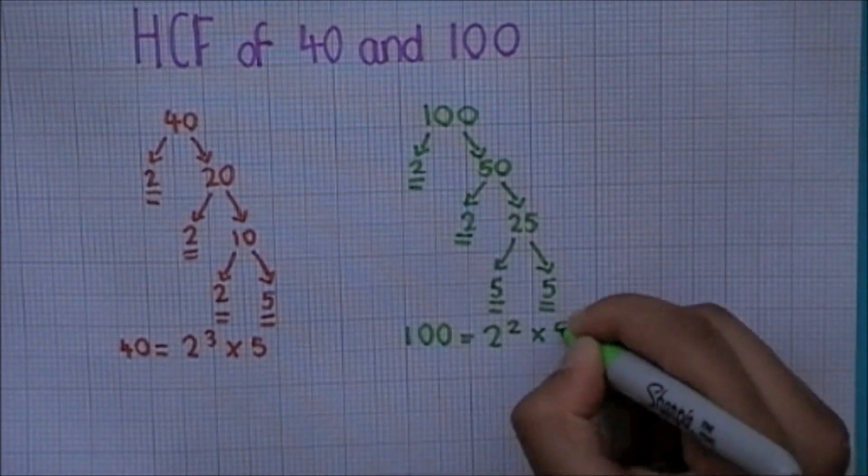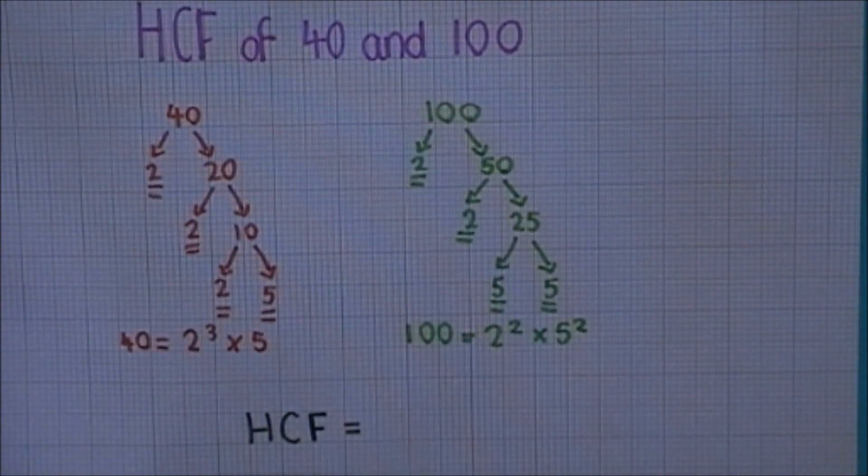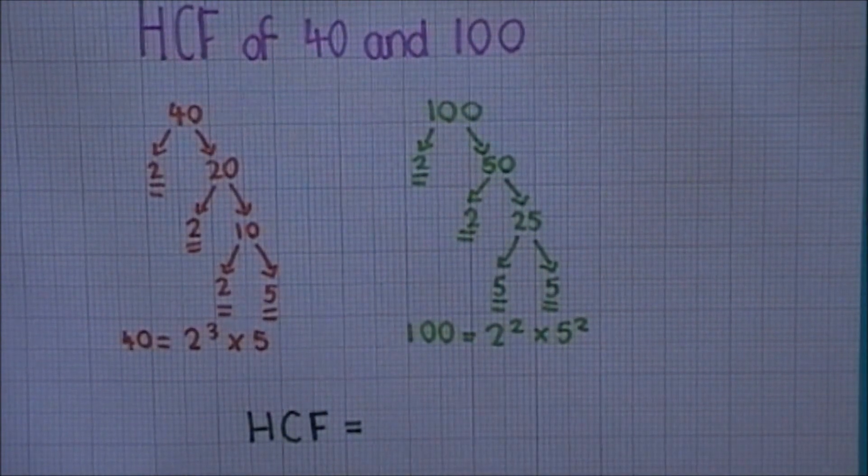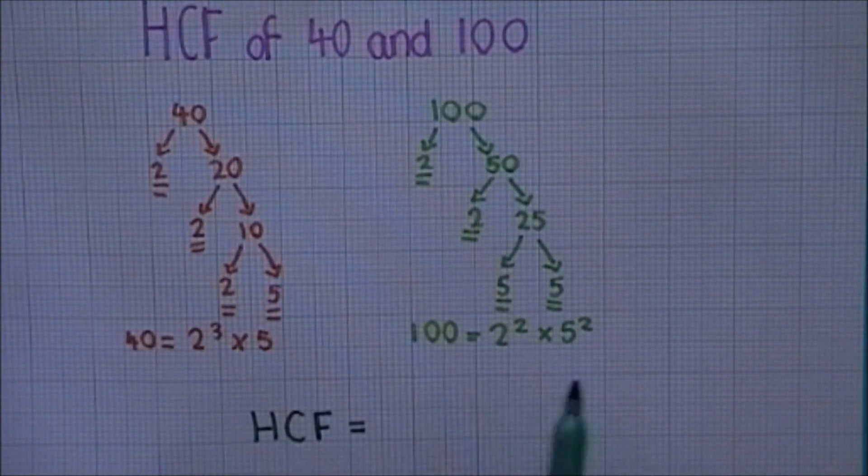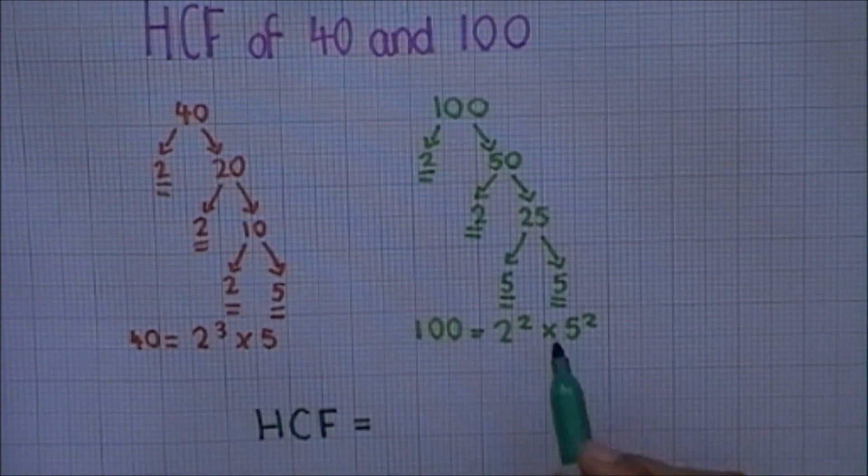We find the HCF by looking at the two answers and finding the highest value that is present in both cases. If we look at 2 first, the value which we would take is the 2 to the power of 2. Then, out of the two values for 5, we would take the 5.